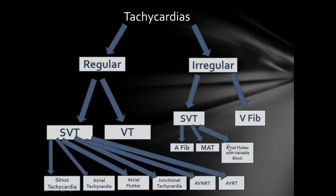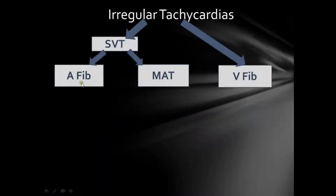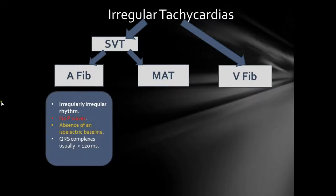We've already explained atrial flutter with variable block under the regular tachycardias video, so here we will be discussing atrial fibrillation, multifocal atrial tachycardia, and ventricular fibrillation. Let's get started first with atrial fibrillation, which is actually the most common sustained arrhythmia. It has many causes and etiologies, but pretty much all of them have the same ECG criteria, which we will be discussing here.